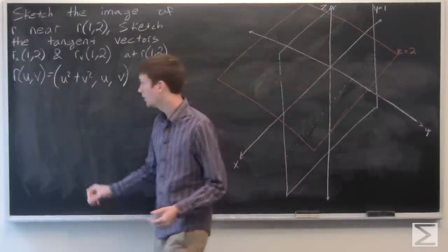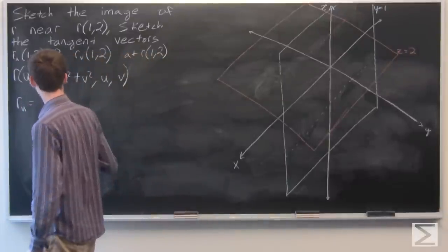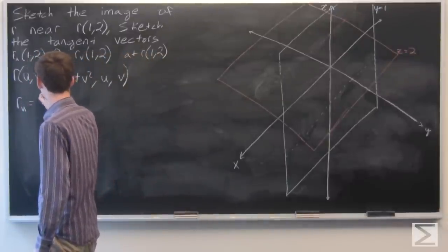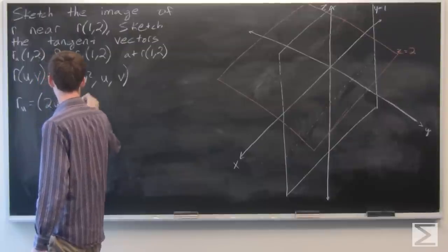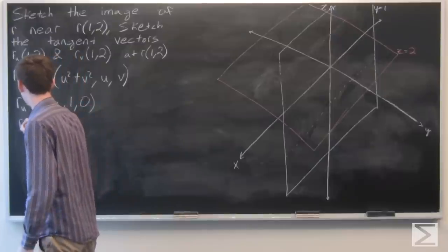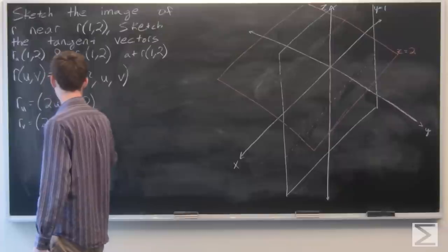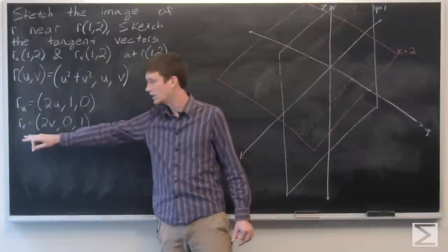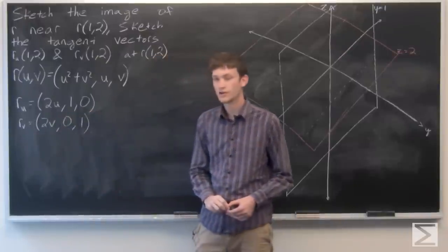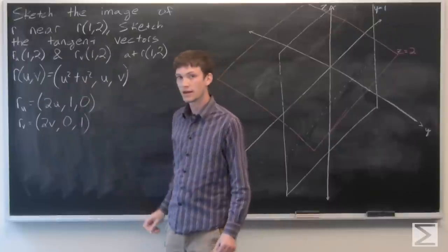So first let's calculate r sub u. We get 2u, 1, 0, and r sub v is 2v, 0, 1, and we'll evaluate that at (1,2).